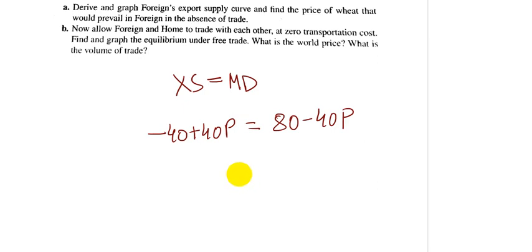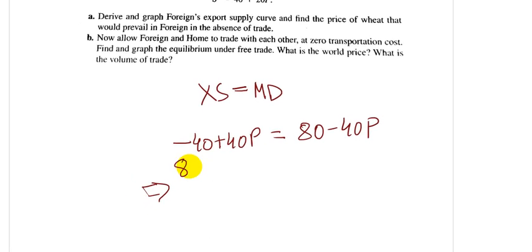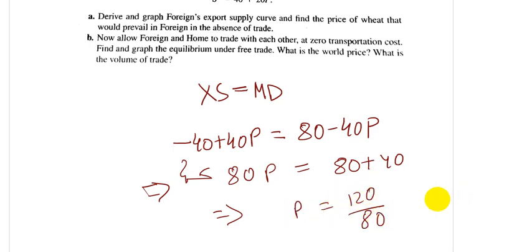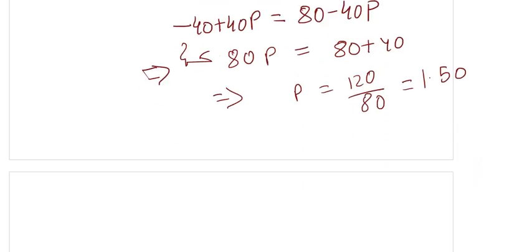Now let us compute the answer. This will be 80P, which equals 80 plus 40. That is, P equals 120 by 80, and this equals 1.5. Thus, the value of trade price is 1.5, and the volume of trade will be V equals 20.